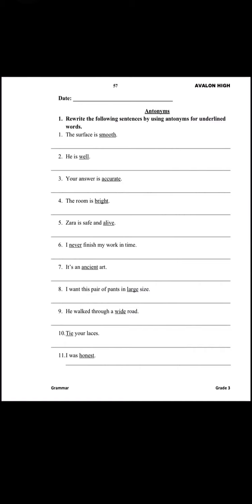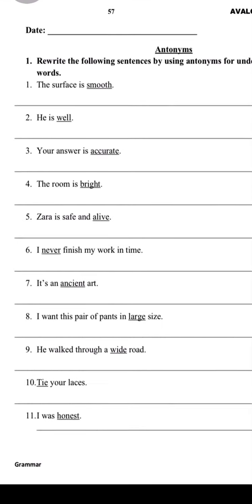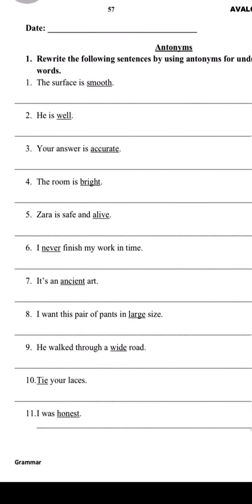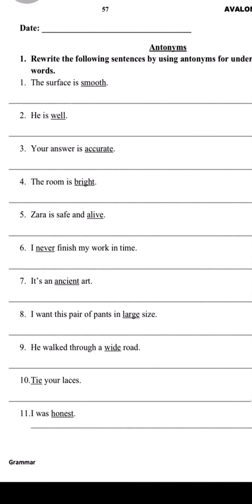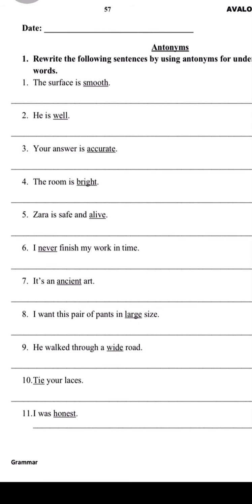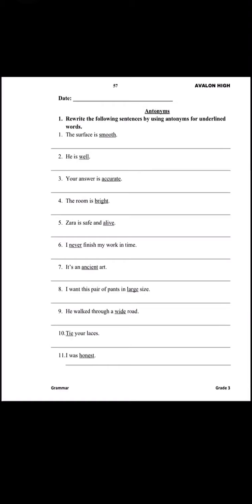Now come to the last page: read the following sentences by using antonyms for the underlined words. Some words are underlined and you have to write the antonym of the underlined word. Number one: 'The surface is smooth' — you will write: the surface is rough. Number two: 'He is well' — he is unwell. Number three: 'Your answer is accurate' — your answer is inaccurate.